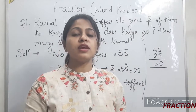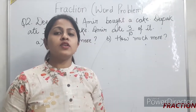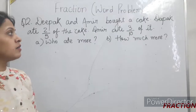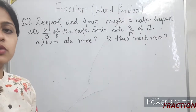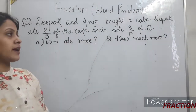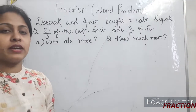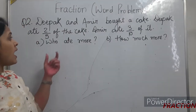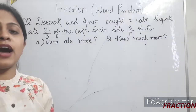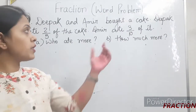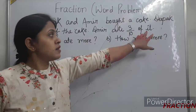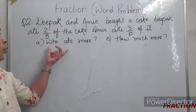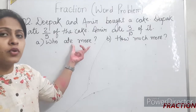Let's come to the second question. Deepak and Ameer bought a cake. Deepak ate 2 by 5 of the cake and Ameer ate 3 by 10 of it. The questions are: who ate more, and by how much?